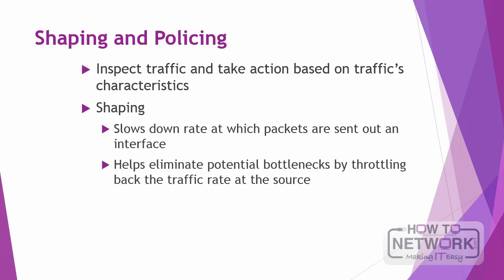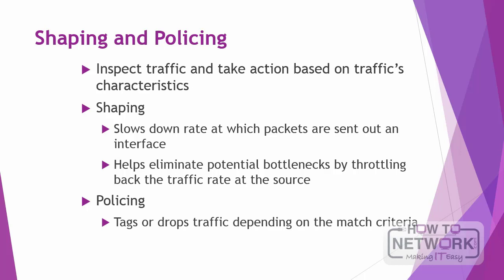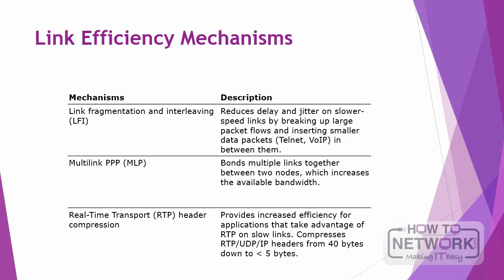Shaping is desirable because it prevents the provider from dropping traffic that exceeds the contracted rate. Policing is a little different — it tags or drops traffic depending on the match criteria. Generally, policing is used to set the limit of incoming traffic into an interface and drop traffic that exceeds those settings. One example of using policing is to give preferential treatment to critical application traffic by elevating it to a higher class and reducing best effort traffic to a lower priority class. The key difference: shaping buffers packets, policing does not.